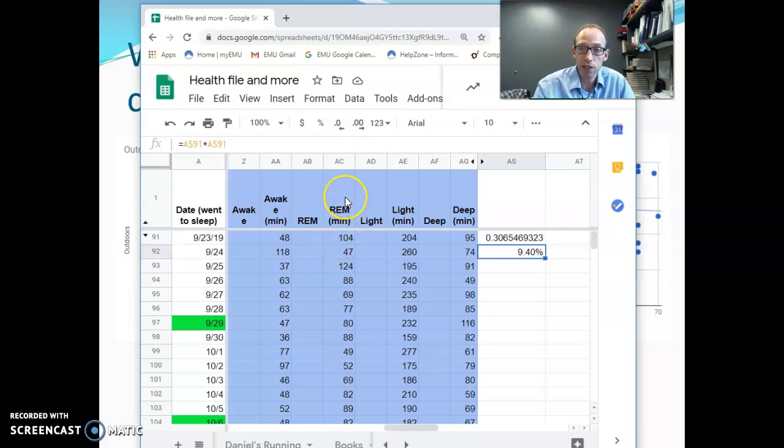And vice versa. 9.4% of the REM sleep that I'm getting can be predicted by how much of the deep sleep I'm getting. So the higher this R squared value is, the better we can predict one if we know the other one.